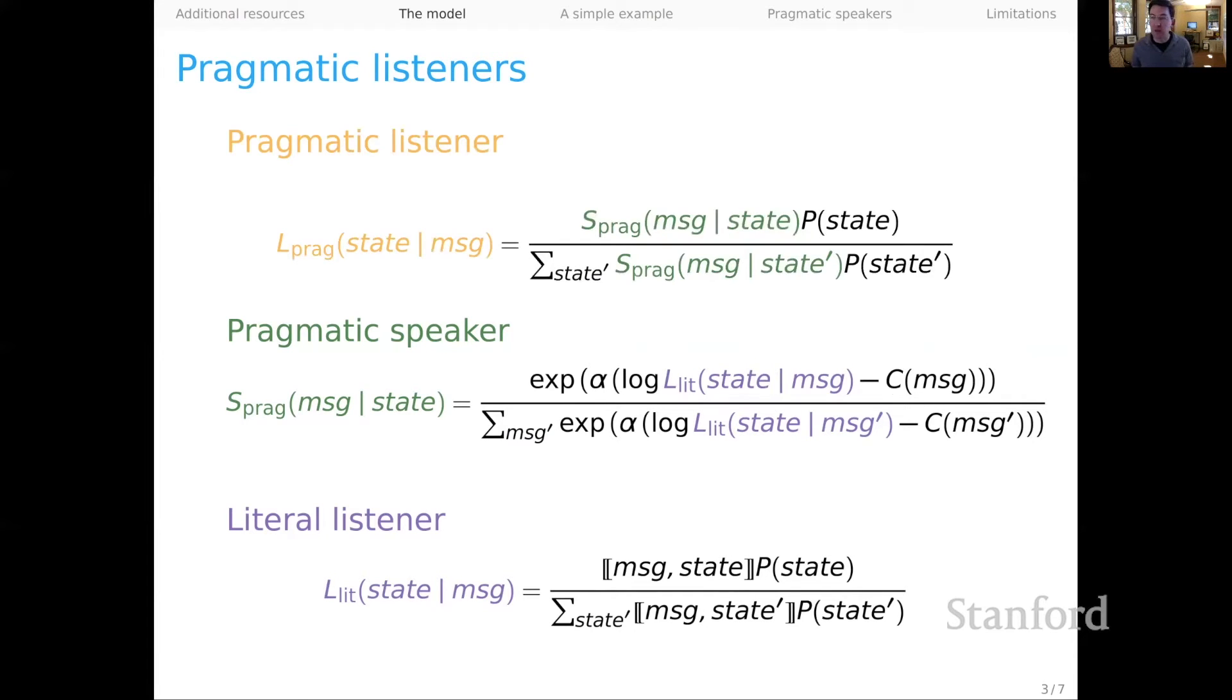And then finally, we have the pragmatic listener, which has essentially the same form as the literal listener. It observes a message and makes a guess about the state of the world on that basis. And it has the same overall form as the literal listener, except it's reasoning not about the truth conditions, but rather about the pragmatic speaker, who is reasoning about the literal listener, who is finally reasoning about the semantic grammar. So you can see that there's a kind of recursive back and forth in this model, you might think of this as reasoning about other minds. And it's in that recursion that we get pragmatic language use.